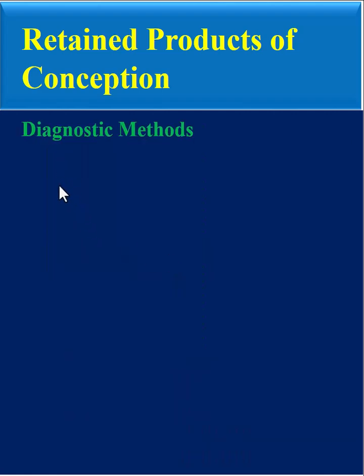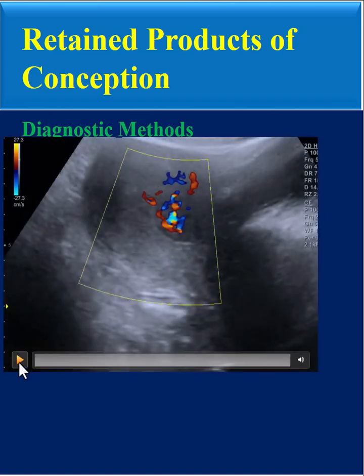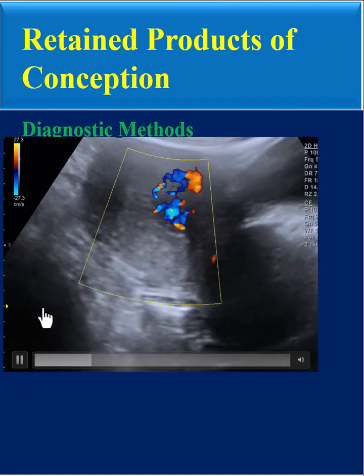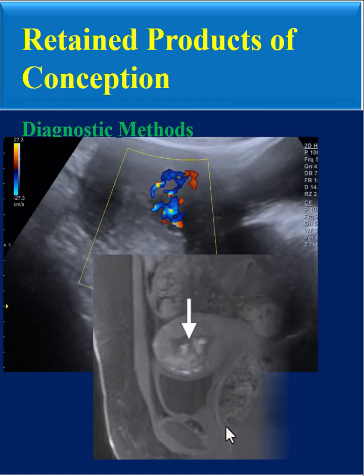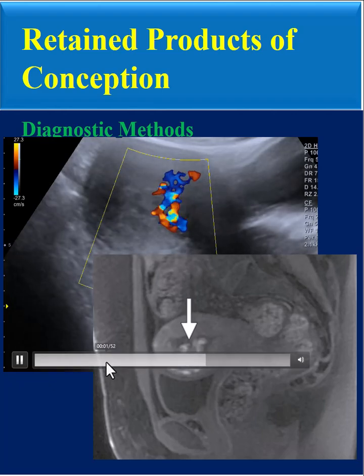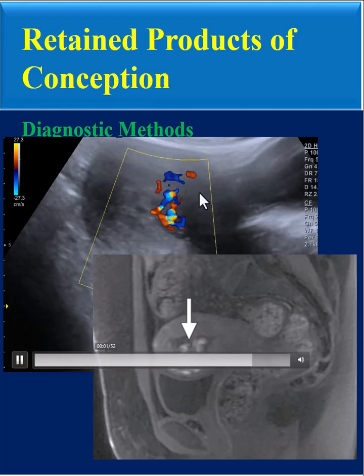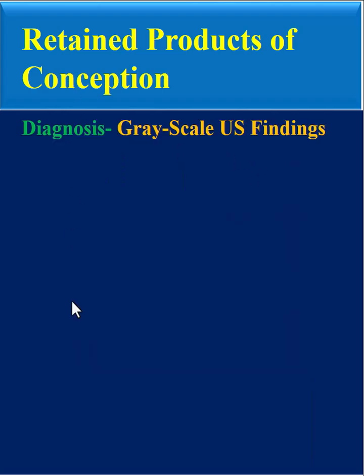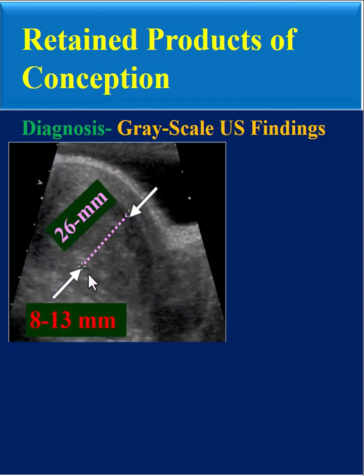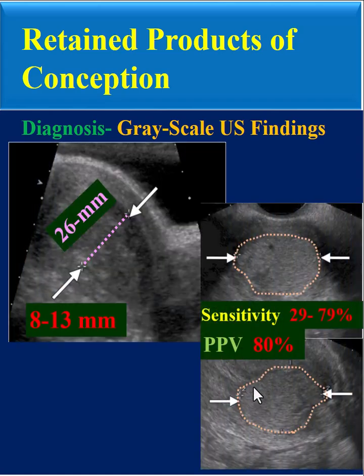We must know the diagnostic methods of RPOC, including ultrasound and MRI. We must know grayscale ultrasound findings of RPOC, for example increased endometrial thickness and echogenic endometrial complex.